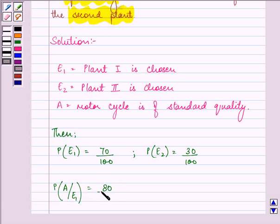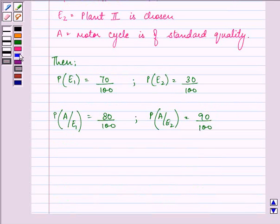P(A|E2) is equal to 90%. We need to find the probability that the motorcycle picked up at random is of standard quality and it is chosen from plant 2.